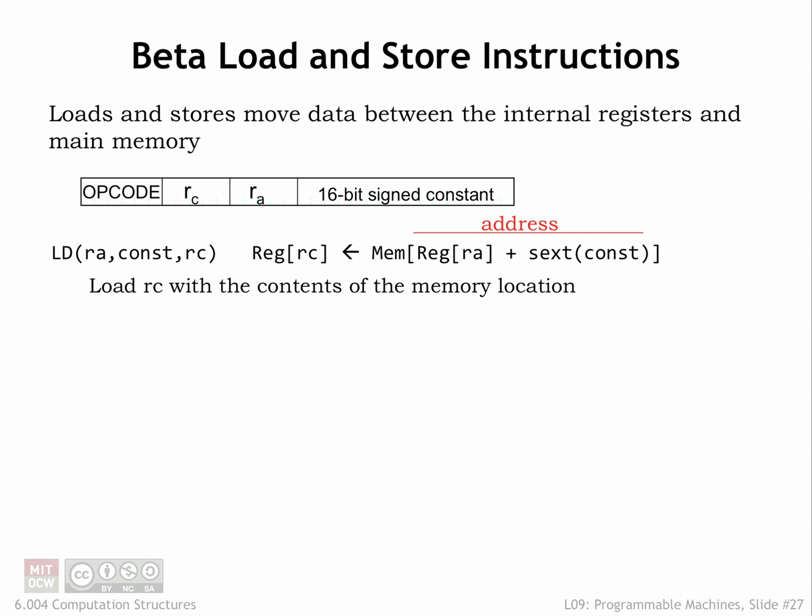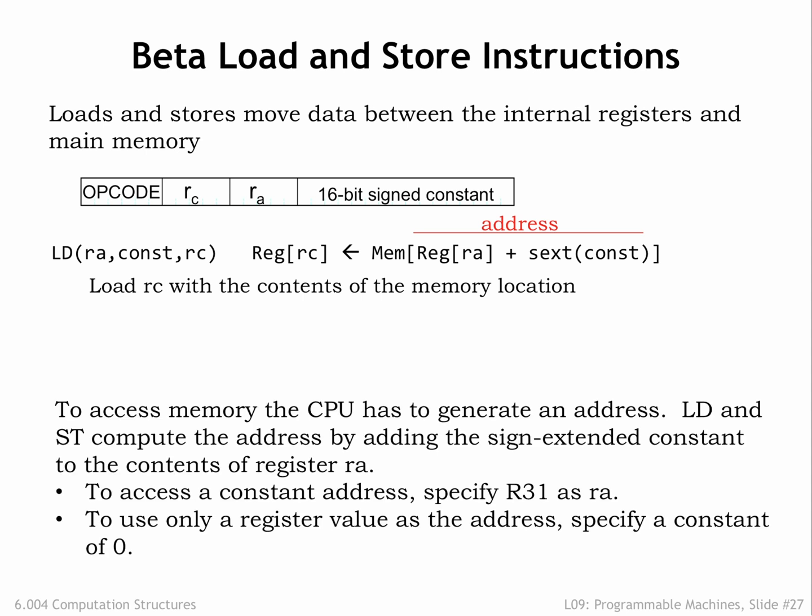The load and store instructions use the same instruction template as the ALU with constant instructions. To access memory we'll need a memory address, which is computed by adding the value of the RA register to the sign-extended 16-bit constant from the low-order 16 bits of the instruction. This computation is exactly the one performed by the ADDC instruction, so we'll reuse that hardware, and the sum is sent to main memory as the byte address of the location to be accessed.